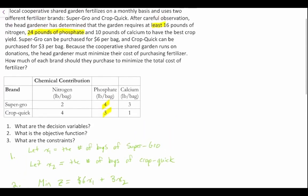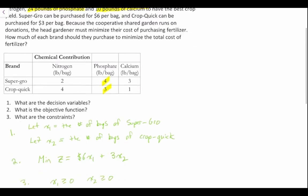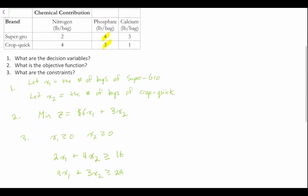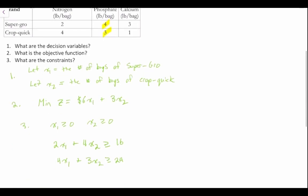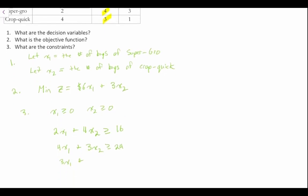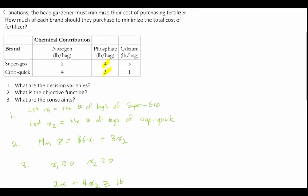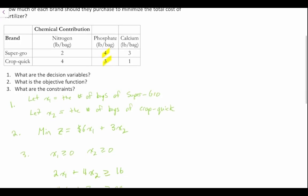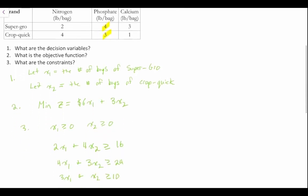And finally, we need at least 10 pounds of calcium. There are 3 pounds of calcium in a bag of Super Grow and 1 pound per bag in Crop Quick, so: 3X1 plus X2 must be greater than or equal to 10. So there you have it — we have identified our decision variables, written our objective function, and established our constraints.